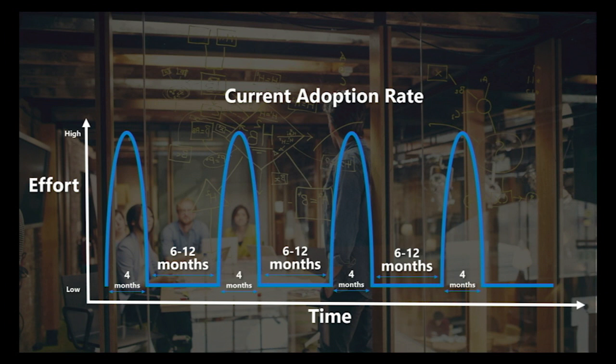After talking with customers from around the world, what we heard was that the service model was still showing the same amount of effort. Releasing every six months, you're still going through all of this validation process, manually testing all of your applications, all of your add-ins, all of your macros. You still need to make sure nothing will break, except now instead of doing it once every couple of years, you're doing it twice a year and you just can't keep up.